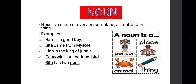Now you people also repeat after me: noun is a name of every person, place, animal, bird or thing. Now let us understand what is the meaning of noun with the help of examples. First example: Ram is a good boy. The first word is Ram and it is the name of a person. According to the noun definition, noun is a name of every person, so Ram will become a noun.